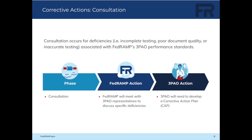If a 3PAO has deficiencies that result in them being placed in consultation, a meeting will be held with 3PAO representatives to discuss specific deficiencies, and the 3PAO will need to develop a corrective action plan, also known as a CAP.